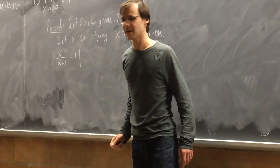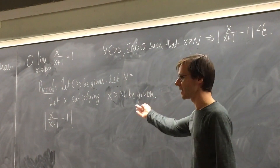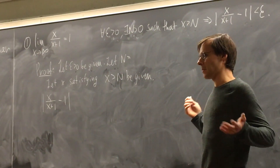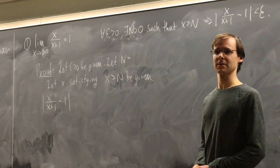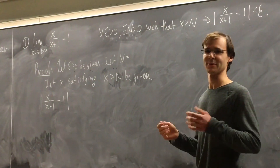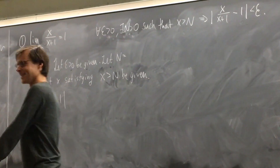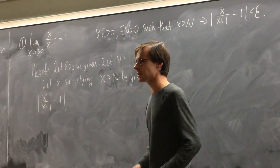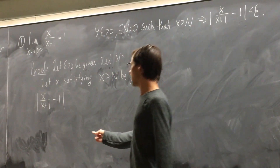Step 1 in limit proofs is always to write these lines. Maybe there's a question on the final you won't know how to do — just write the definition; that's a free mark. Step 2 is algebra: if you have a fraction, use a common denominator; if you have a square root, use the conjugate; if you have a polynomial, subtract and factor. If you do a couple of examples of each kind, you know what to do.